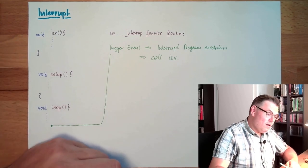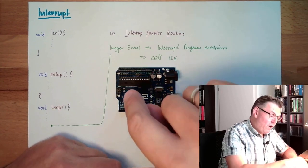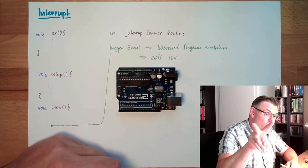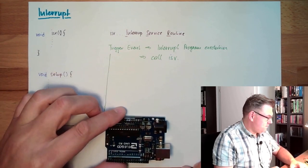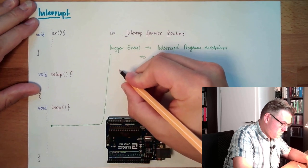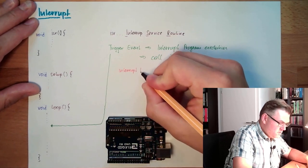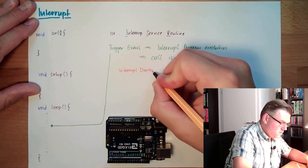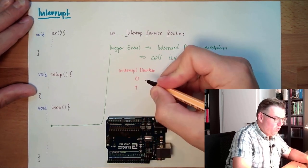Here's our Arduino. In our Arduino Uno we have two interrupts available. We have an interrupt number zero and we have an interrupt number one.